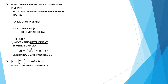The determinant gives two results. If determinant of A = AD minus BC equals 0, the matrix is called a singular matrix. If the determinant of A = AD minus BC is not equal to 0, it is called a non-singular matrix.